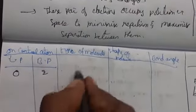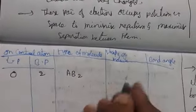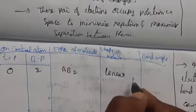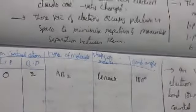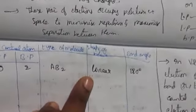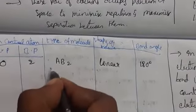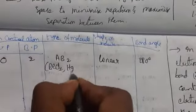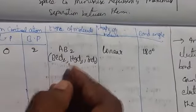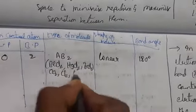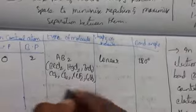With zero lone pairs and two bond pairs, the molecule type is AB2 and the shape is linear with a bond angle of 180°. Examples include BeCl2, HgCl2, ZnCl2, CO2, CS2, XeF2, C2H2, and N2O — all these are linear molecules.